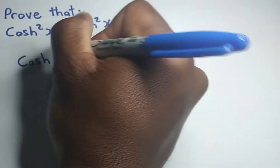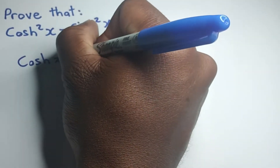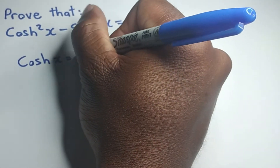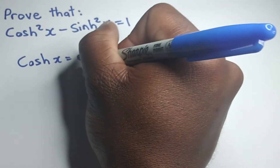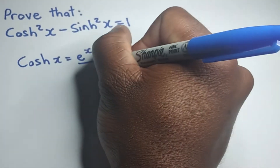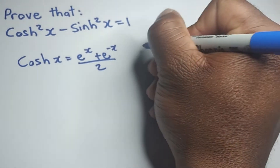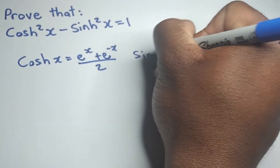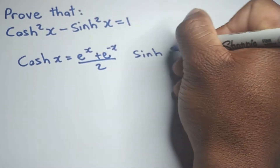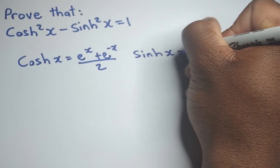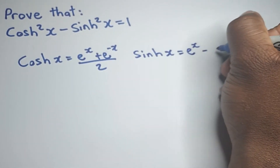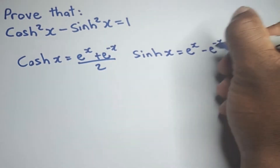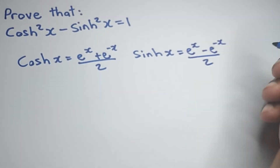The definition for hyperbolic cos of x is equal to e to the x plus e to the minus x over 2. Whilst the definition for hyperbolic sin of x is equal to e to the x minus e to the minus x over 2.